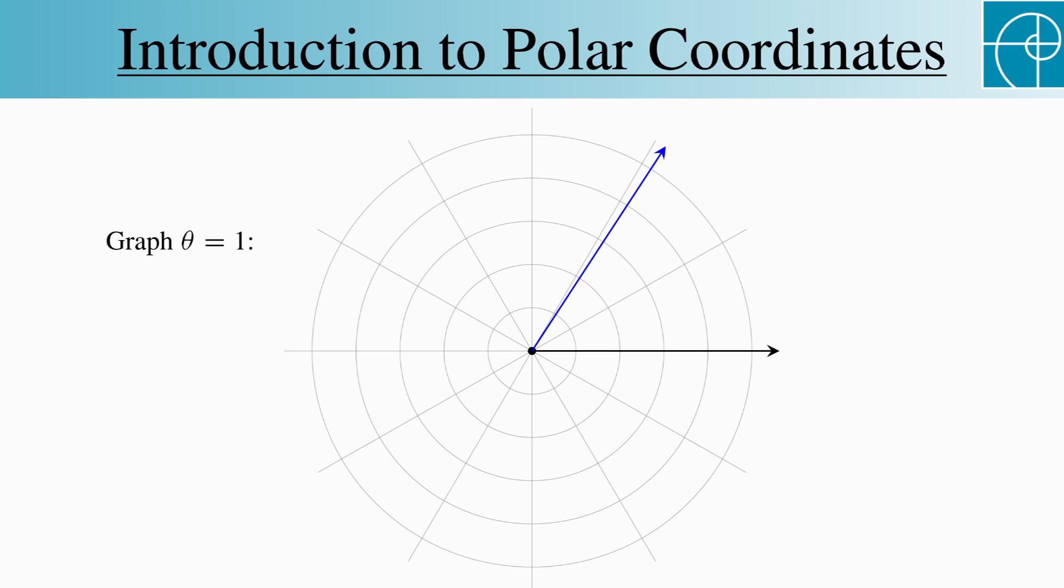And I lied a bit earlier when I said that r is a distance, since we actually allow r to be negative, which corresponds to a ray pointing in the opposite direction from the one we just drew. So this part of the graph satisfies the given equation and has r ≥ 0, while this part satisfies the given equation and has r ≤ 0.